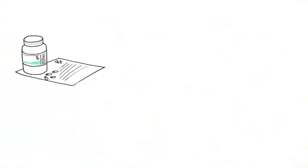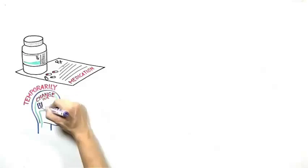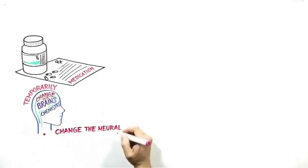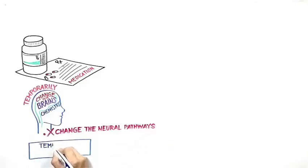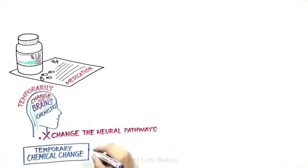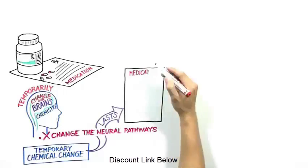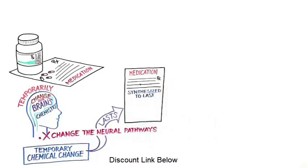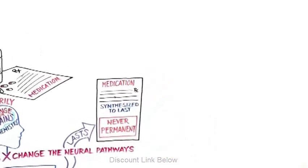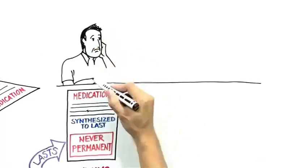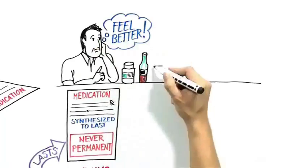You see, most people take medications or pills to feel better. But medications or pills only temporarily change the brain's chemistry. And this is always a temporary chemical change. It only lasts as long as it is synthesized to last. It is never permanent. You'll always have to take another pill or another drink or another smoke to make you feel better.